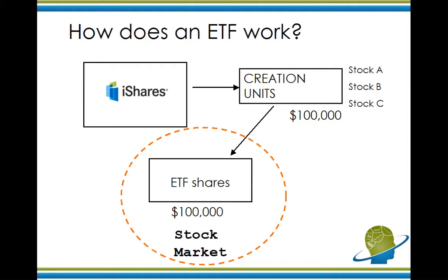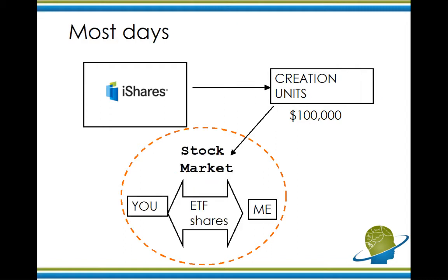It's the ETF shares which represent the creation units that trade back and forth in the stock market. On most days, you and I will trade these shares back and forth. Depending on what the creation units are worth, the ETF shares should be worth what the creation units are worth. So through supply and demand, if the Dow is going up, our shares will be going up — because otherwise I could just buy the 30 shares in the Dow. So the share price of the exchange traded fund is always being corrected, changed by the second, by the microsecond, to reflect what the index is doing.